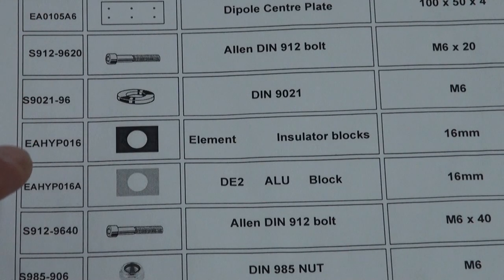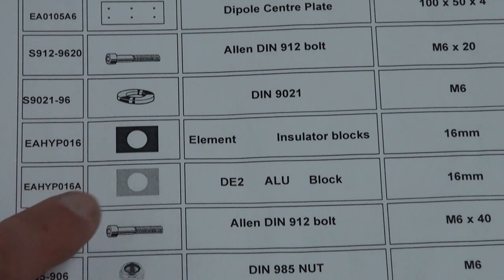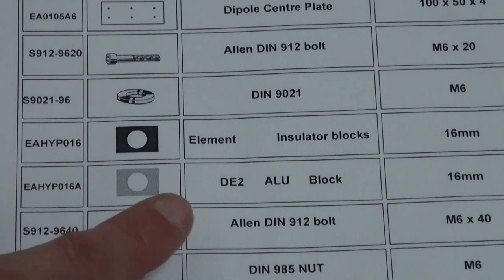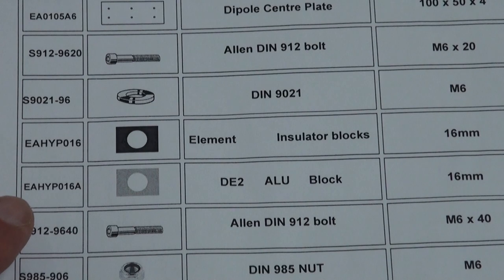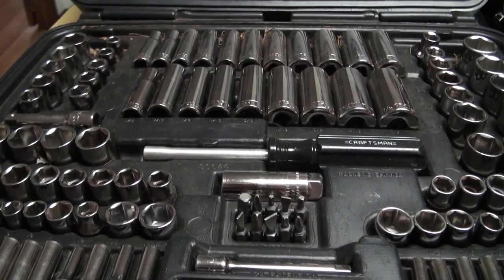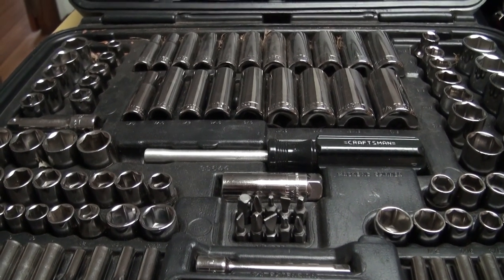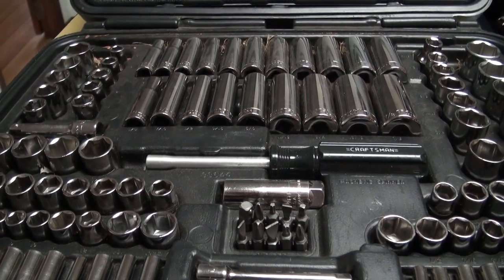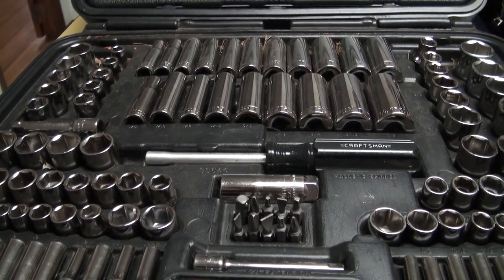The part numbers you'll be working with are rather long. In fact, the aluminum block for Driven Element 2 is part number EAHYP016A. To build the LFA-3, it is best to have access to both a metric and an imperial toolset.